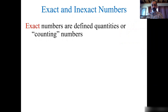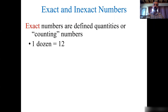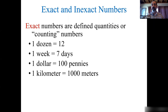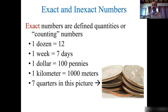In some cases, measurements are numbers that have possible round-off errors because we have to make a prediction. Or we have exact numbers, which are easier. Exact numbers are things you can count — there's no discrepancy. Common examples: a dozen is 12 eggs, a week is seven days, a dollar has 100 pennies, a kilometer has 1,000 meters, seven quarters. These are exact numbers — you can count them, and there is no uncertainty.